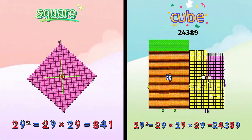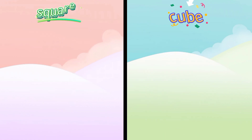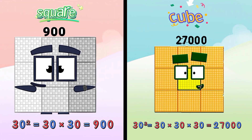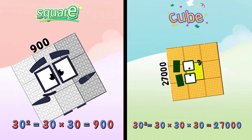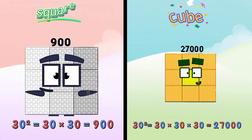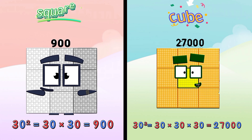Square of 29 is 841, and cube of 29 is 24389. Square of 30 is 900, and cube of 30 is 27000.